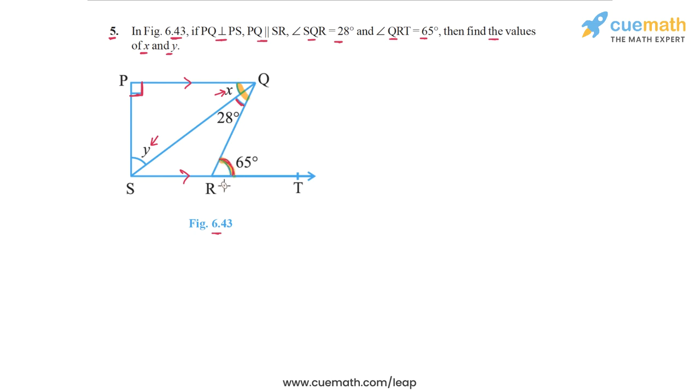Because they are a pair of alternate interior angles, that will enable us to find x. Once we have x, then we will apply the angle sum property in triangle PQS because two of the three angles would be known, so we can find the third angle which is y. Let's use this reasoning.